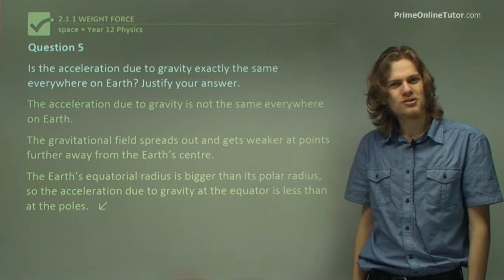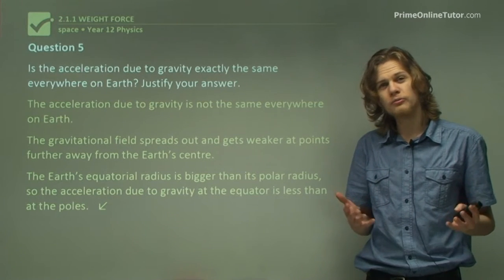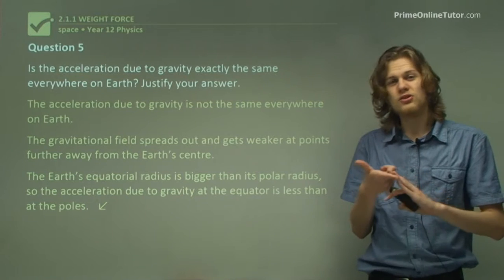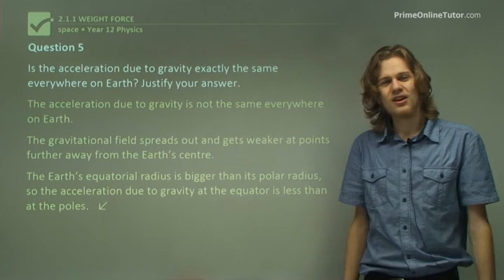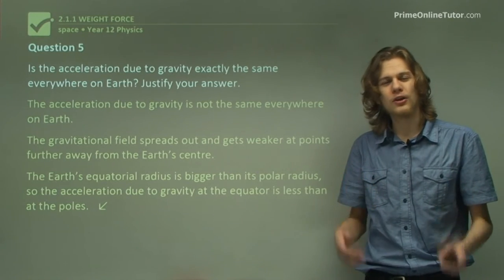Well, that's the end of the questions. So in this section, we've gone over the Earth's gravitational field, its strength, its shape, and its uniformity. In the next section, we'll be looking at a bit more detail on how weight works and how it affects different objects.